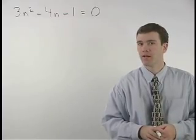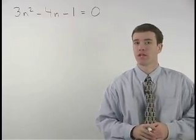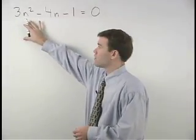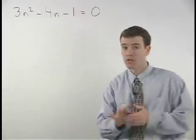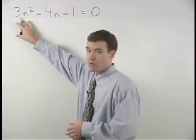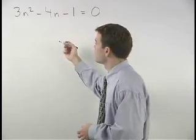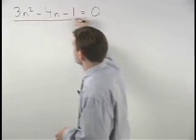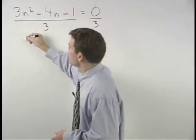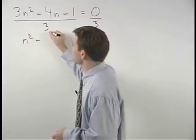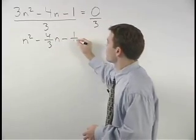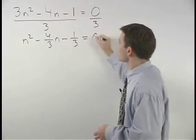When completing the square, it's very important to understand that we cannot have a coefficient on the squared term. So our first step in this problem is to get rid of our coefficient of 3 by dividing both sides of the equation by 3 and we have n squared minus 4 thirds n minus 1 third equals 0.